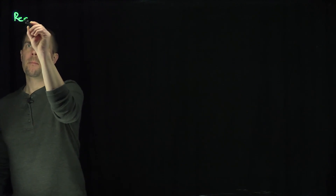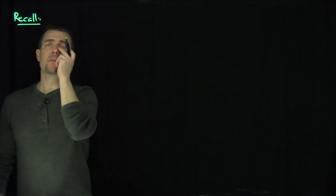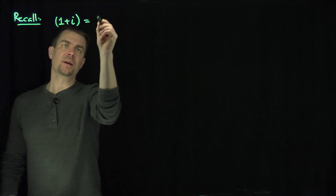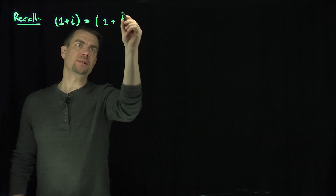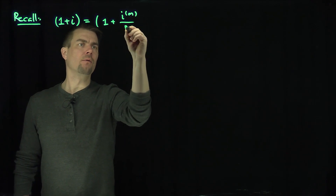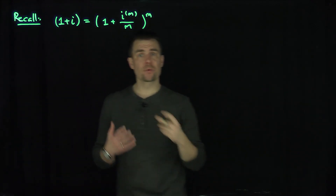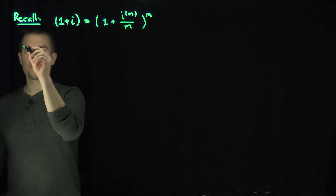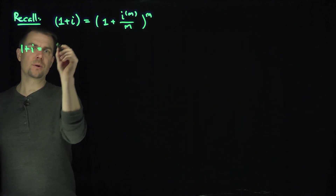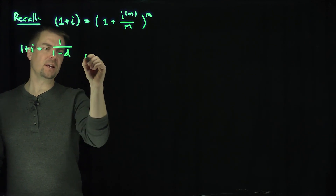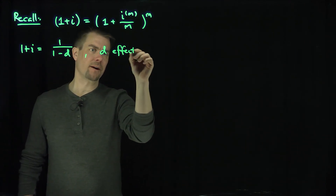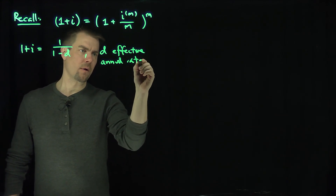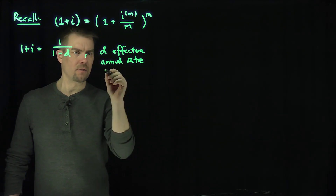Recall that we have the relationship that 1 plus i — where i is the effective annual rate of interest — is equal to (1 + i^(m)/m)^m. That's how we define a nominal rate of interest in terms of an annual rate of interest. We also have the formula that 1 + i = 1/(1 - d), where d is the effective annual rate of discount.